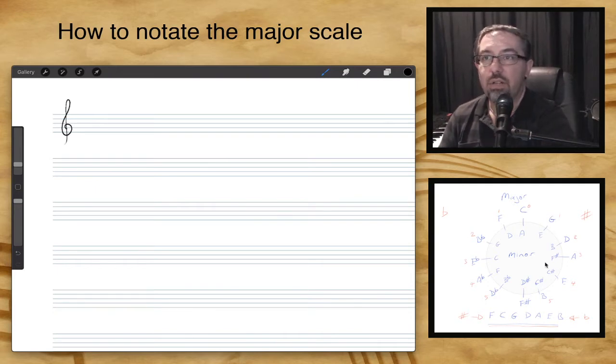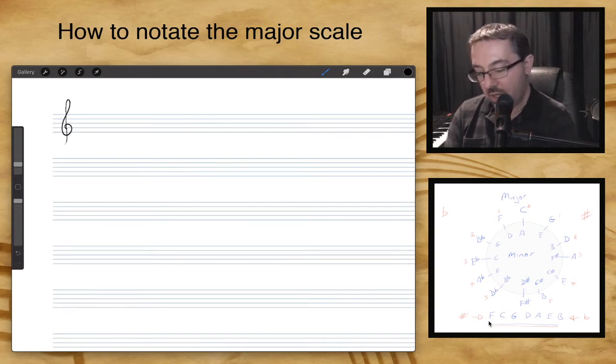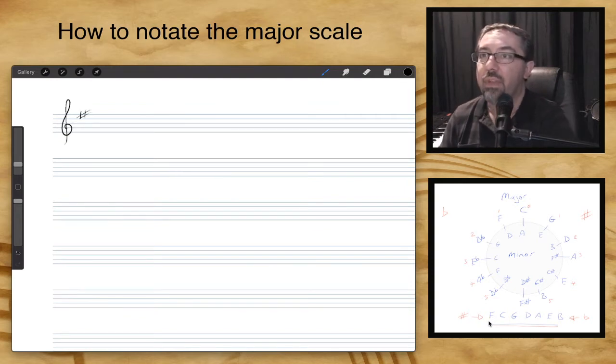And on our circle of fifths, I'm going to start with our G major over here, where we had our G. It had a 1 next to it, referring to 1 sharp. And if I go to my order of sharps, that was our F sharp. So let's draw our F sharp, because we're going to write this scale with a key signature. So our F sharp goes over our top line there.